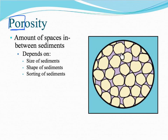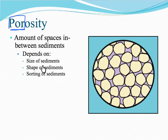Porosity is the amount of spaces in between sediments. All these little purple spaces are pore spaces, and the amount of spaces this body of rock has is its porosity. Porosity depends on three things: the size of the sediments, the shapes of the sediments — circles, squares — and the sorting of sediments, meaning whether circles and squares are next to each other or if there are lots of little pockets and holes and pore spaces in the rock.